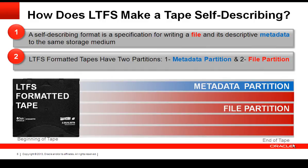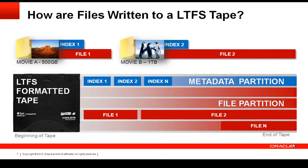How does LTFS make a tape self-describing? It partitions a tape cartridge into two partitions: the metadata partition and the file partition. All of a file's metadata is in the first partition at the beginning of the tape — the blue metadata partition as shown in this diagram — and then all the files follow in the file partition. So if you have a movie about buttes and canyons and deserts, the index for that will be at the very beginning, followed by the file in the file partition. If you add a movie later about penguins, the index for that file will follow index one, and then file two — the penguin movie — will follow file one on the tape.